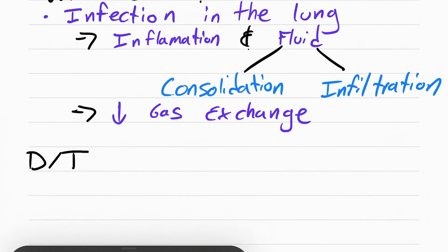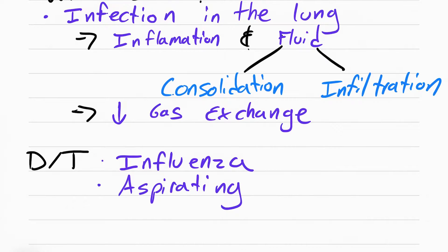Pneumonia can be caused by several things. By far one of the most common is the flu. Influenza causes pneumonia - first the patient gets infected with the flu virus and then they develop pneumonia. The patient can also aspirate on something which causes pneumonia.